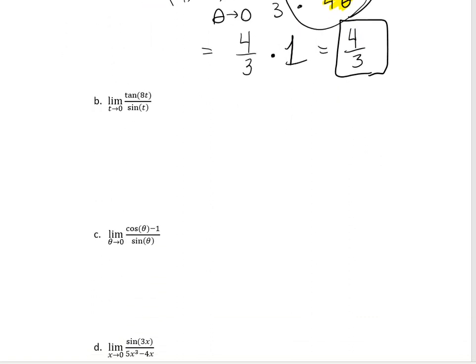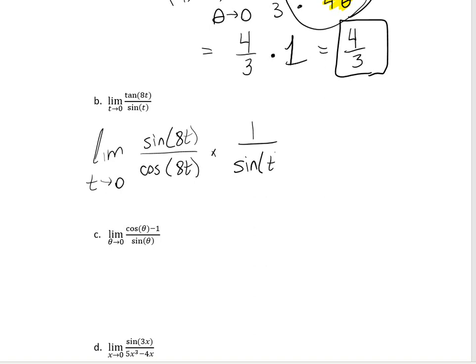On the next one, I'm taking the limit of tan of 8t divided by sine of t. I'm not super sure what to do here, so I'm going to try to rewrite it using trig identities. I'll rewrite this as the limit as t goes to 0 of sine of 8t divided by cosine of 8t, and then dividing by sine of t is the same as multiplying by 1 over sine of t.